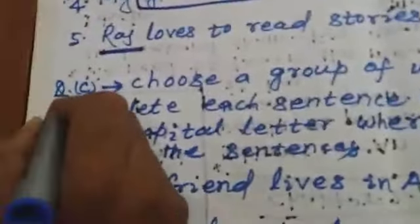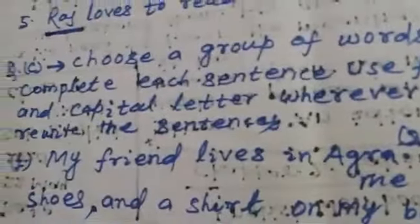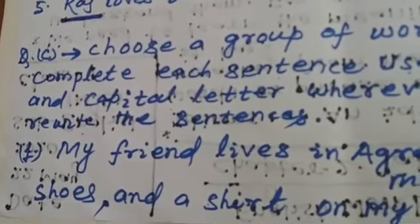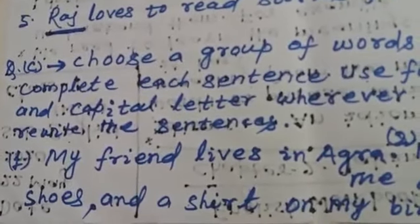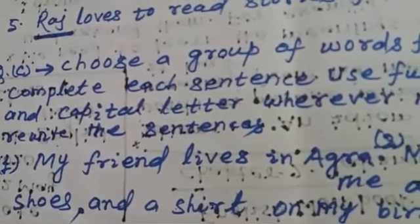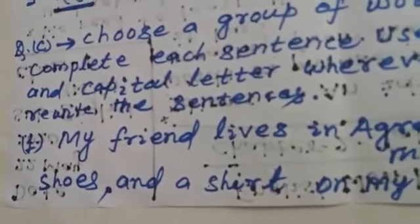Now, question number C. The instruction is: choose a group of words from the word box to complete each sentence, using full stops, commas, and capital letters where necessary, and write the sentences. In this question, words are given in a word box. Take words from the box to complete the incomplete sentences, keeping in mind where capital letters, small letters, full stops, and commas should be used.